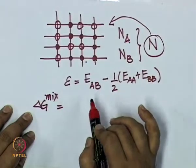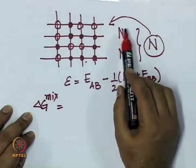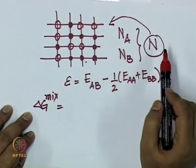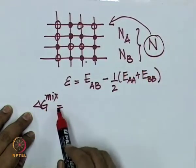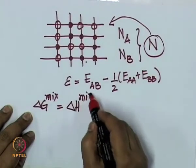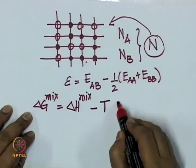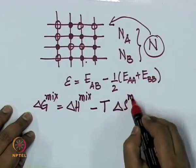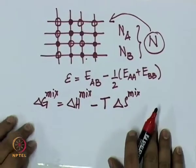The difference between the two free energies is known as ΔG^mix, the excess free energy associated with mixing. This we showed to be equal to the enthalpy of mixing minus temperature times the entropy of mixing, where the entropy is purely configurational.